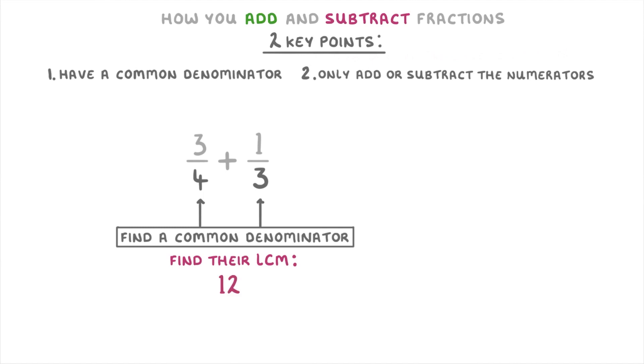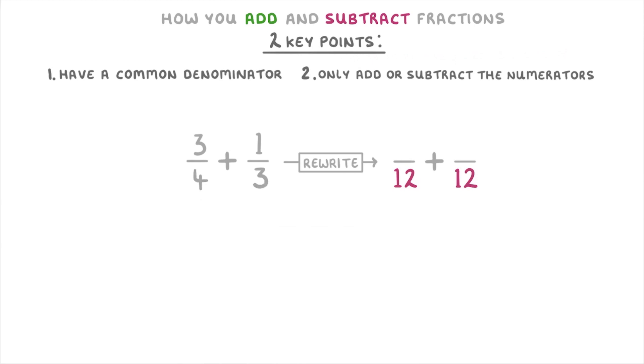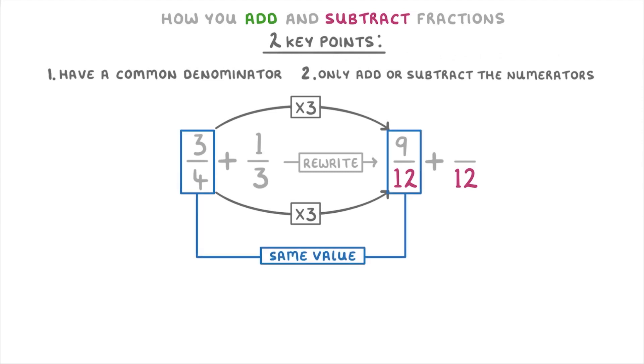Now that we have the LCM we can rewrite the equation but with both of our denominators as the number 12. Then because we've changed the denominators of our fractions, we're going to have to figure out what the new numerators will be. To get from 4 to 12 we've effectively multiplied it by 3, so we're also going to have to multiply the numerator of 3 by 3 as well to get 9. This means that we've changed the 3/4 into 9/12, but that's absolutely fine because they're both exactly the same value. 3/4 is just a more simplified version.